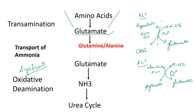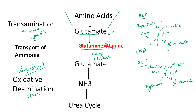Transamination occurs in all tissues of the body in the cytoplasm. The glutamate formed is then transported through the blood and tissues to reach the liver where it undergoes oxidative deamination. It is transported in the form of glutamine because glutamine is easily diffusible across tissues. In the case of skeletal muscle, glutamate is converted to alanine, which then enters the liver to undergo oxidative deamination, and the ammonia enters the urea cycle.